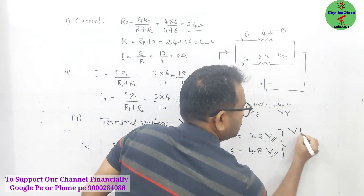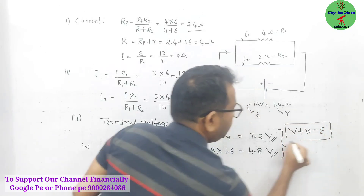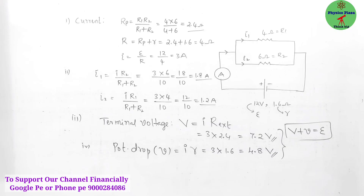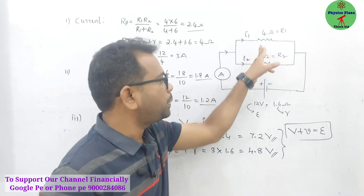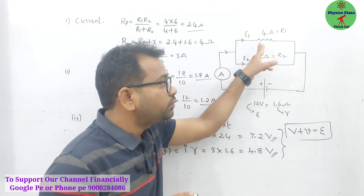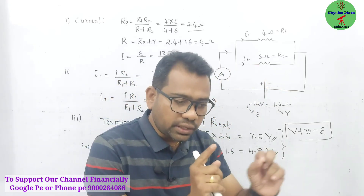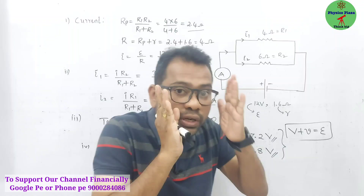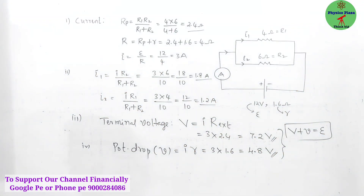You can cross-check: terminal voltage + potential drop must equal EMF — 7.2 + 4.8 = 12 volts. This is how we can cross-check our answer. Now you may get one doubt: here both resistors are connected in parallel. What if the two resistors are connected in series? When resistors are in series, they may ask you to calculate the potential difference across each resistor.